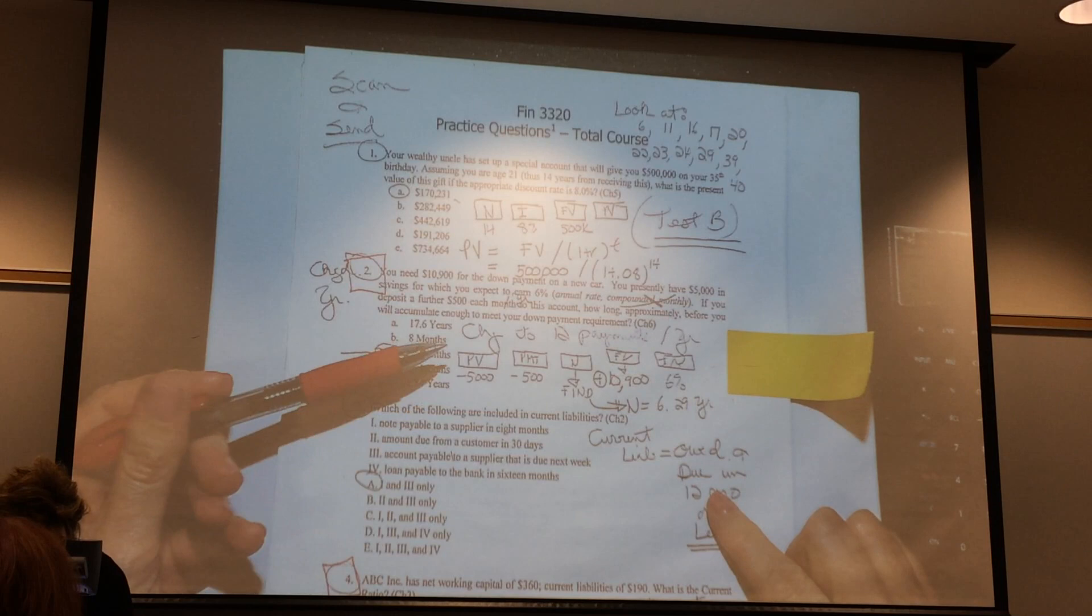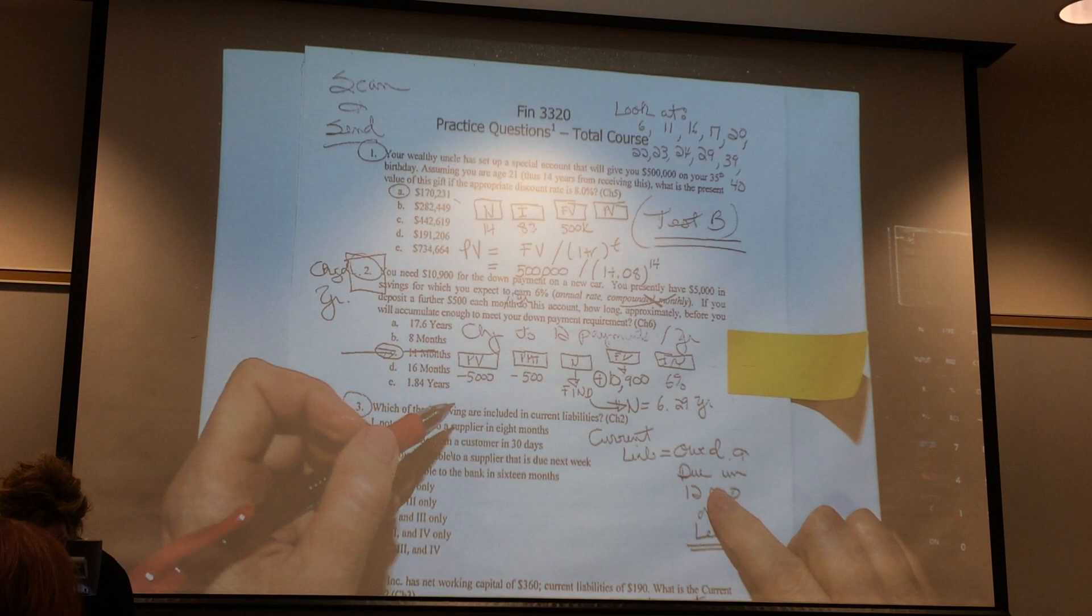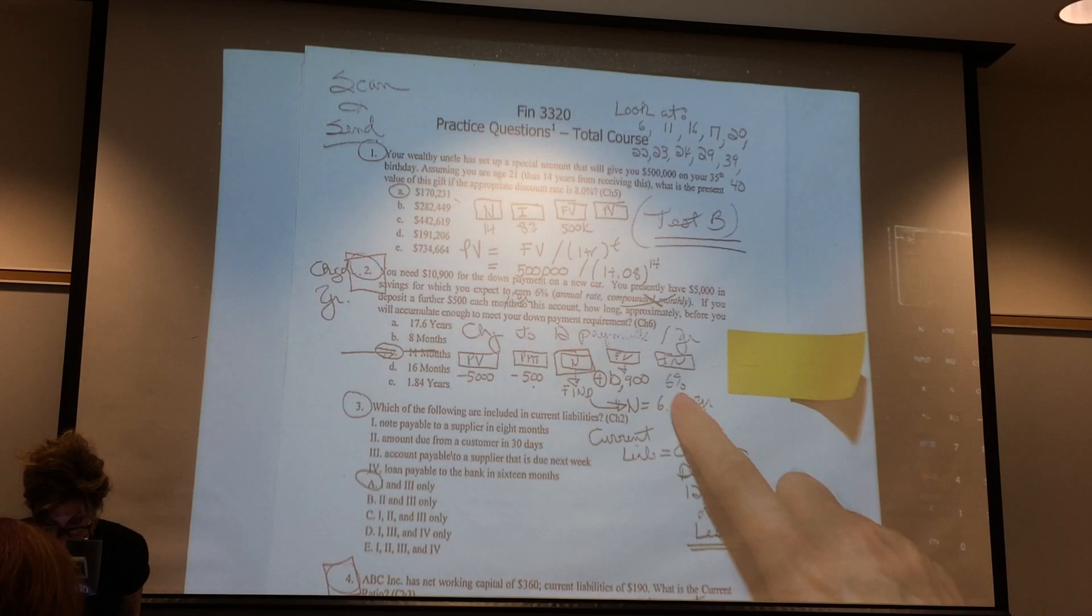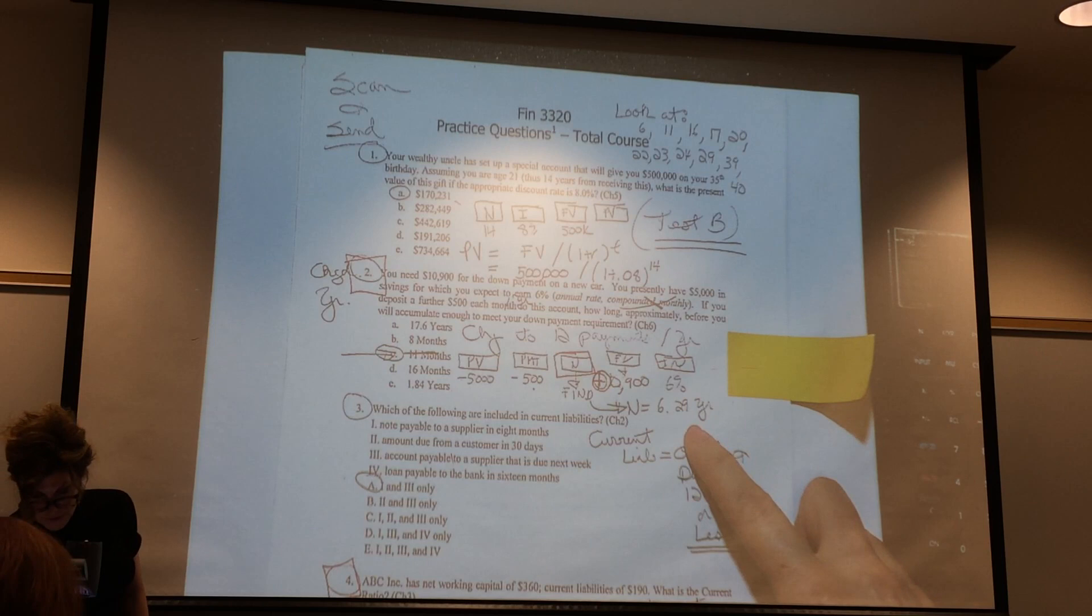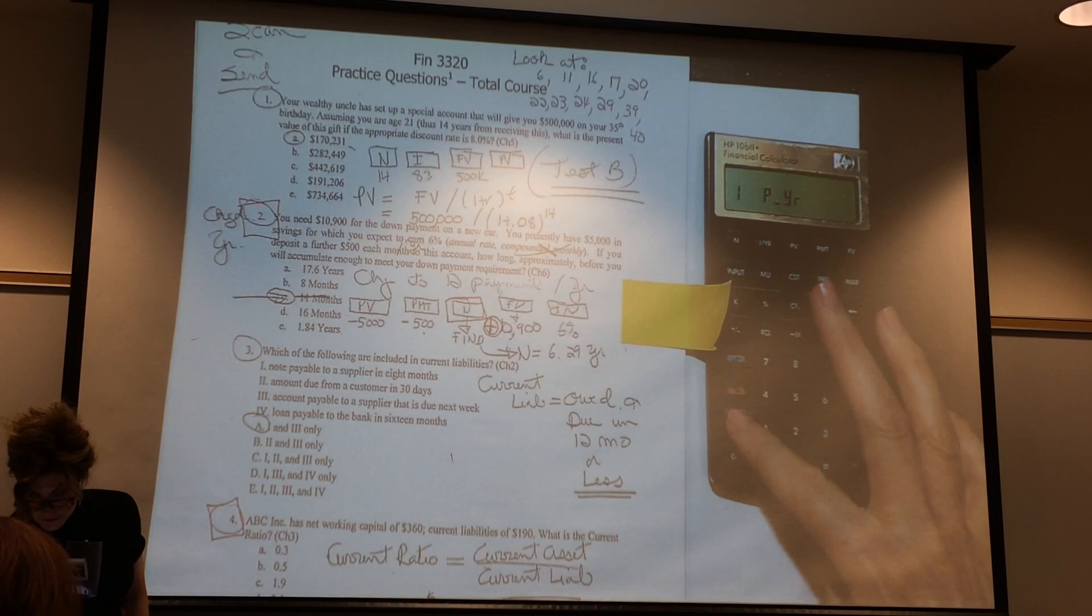Alright, so they're telling you that you currently have $5,000. You're going to put in $500 a month. Those are both negative. You're looking to find your end. You need $10,900 in the future, positive. Your interest a year is 6%, you don't change that. And you need to figure out how many months is it going to take you.